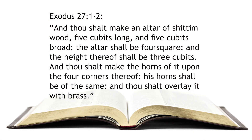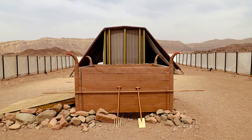Exodus 27:1-2 reads, 'And thou shalt make an altar of shittim wood, five cubits long and five cubits broad. The altar shall be foursquare, and the height thereof shall be three cubits. And thou shalt make the horns of it upon the four corners thereof. His horns shall be of the same, and thou shalt overlay it with brass.' The things that hit me in the heart as I stood at the entrance was first, noting that there is only one way into the tabernacle, which pictured Christ, but also that there was this large brazen altar standing right there at the entrance, teaching that there is no approaching the presence of God without first having your sins dealt with.